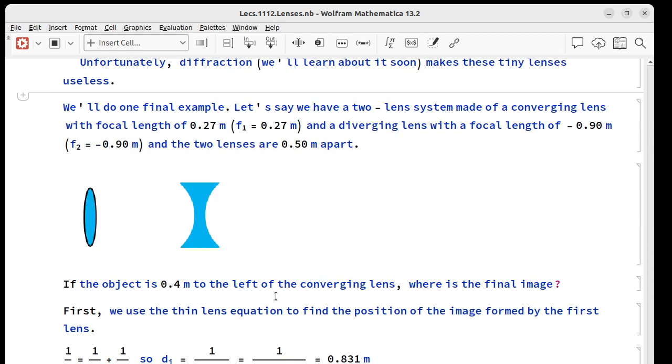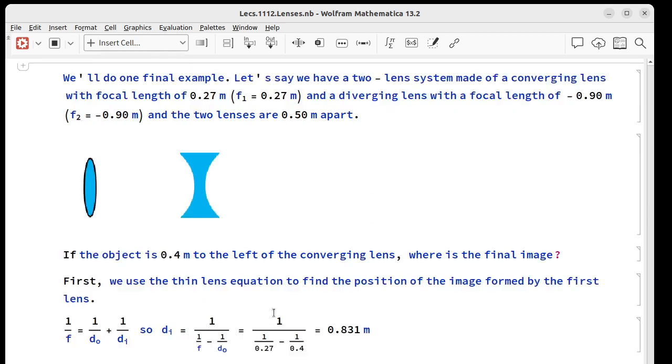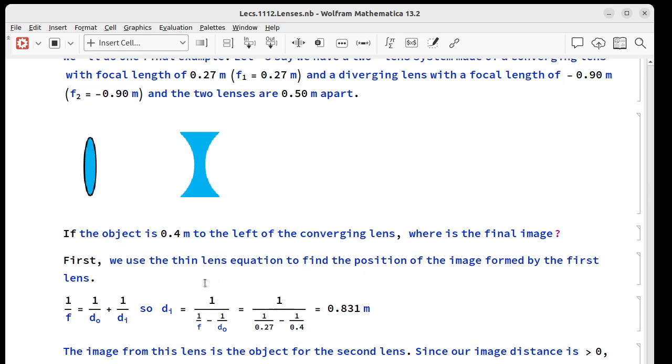Let's do one last example with two lenses. Let's say we've got a converging lens with focal length 0.27 meters and a diverging lens with focal length minus 0.9 meters, and the two lenses are half a meter apart. If our object is 0.4 meters to the left of the converging lens, where's our final image? First, we use the thin lens equation on the first lens. We have image distance is 1 over 1 over f1 minus 1 over d0. So 1 over 1 over 0.27 minus 1 over 0.4. That's 0.831 meters. That image will be the object for our second lens.